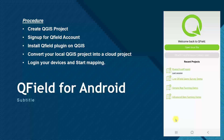The procedure is: first, create your QGIS project. Second, sign up for a QField account — it takes less than a minute, just fill in your name, email, and a password. Third, install the QField plugin on your QGIS software. Fourth, convert your local QGIS project into a cloud project. If you already created your project locally on your PC, all you need to do is convert it to a cloud project. The linked video covers all of these steps.